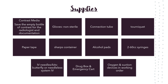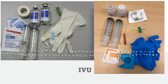Supplies needed for IVU: contrast media, non-sterile gloves, connection tube, paper tape, alcohol pads, 60cc syringes, the drug box, IV needles or kits such as butterfly or needleless IV system, and oxygen and suction devices in working order. The drug box should contain epinephrine and/or Benadryl. Make sure you have the emergency cart or know exactly where it is. IV needle gauges 18, 20, and 22 should be available. Take the scout before placing the IV in the patient.